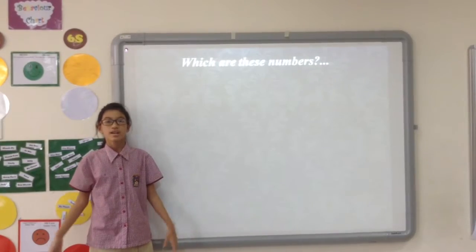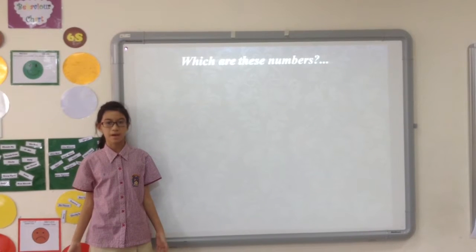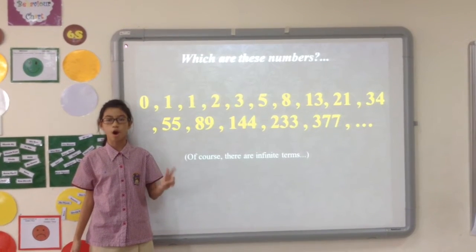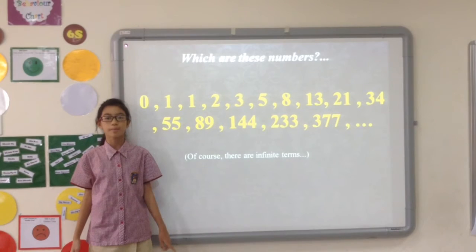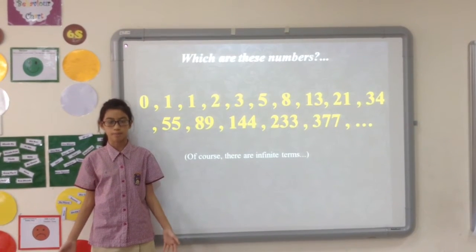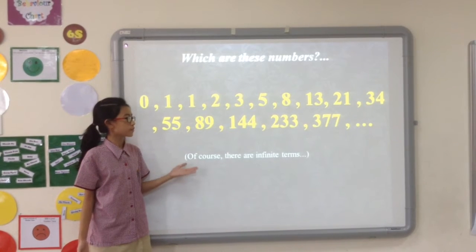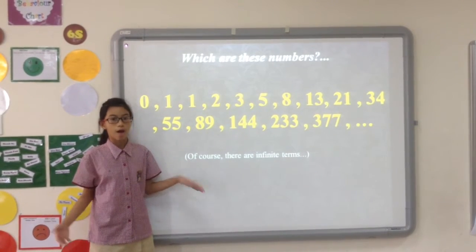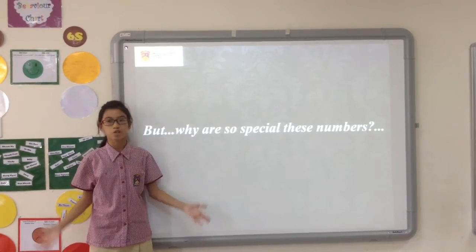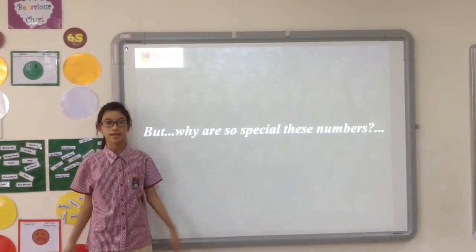What are these numbers? These numbers follow a simple rule of formation. By definition, the first two Pubernesti numbers are 0 and 1. Each remaining number is the sum of the previous two numbers. Here are the first 15 Pubernesti numbers. Of course, there are infinite terms. But why are these numbers so special? My friend will tell you all about it.